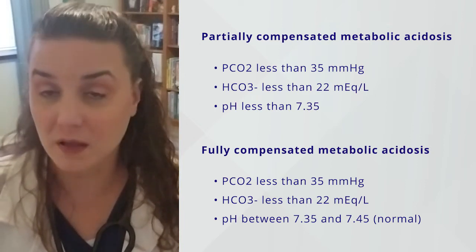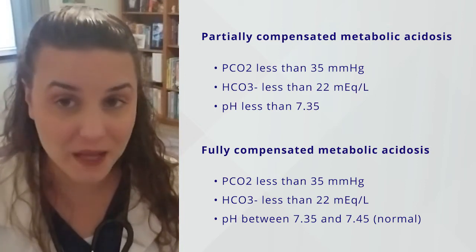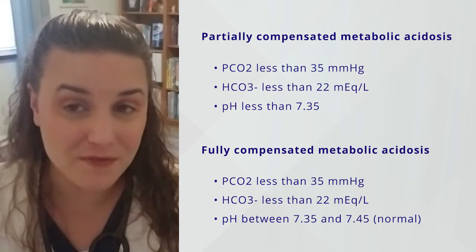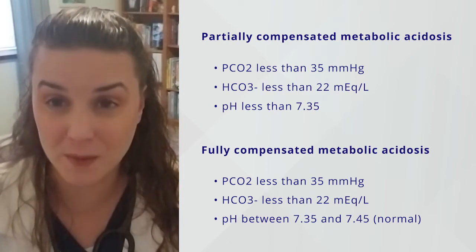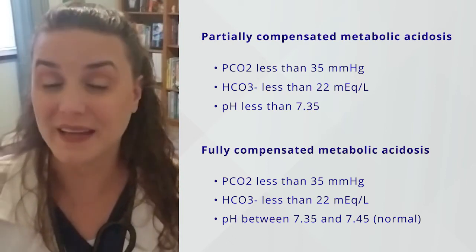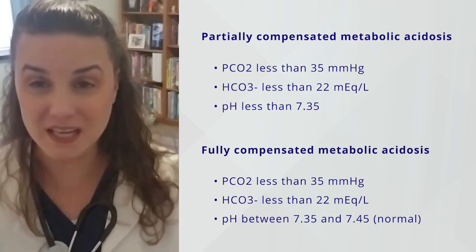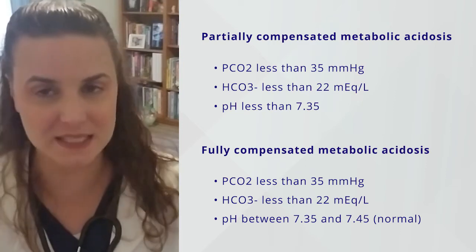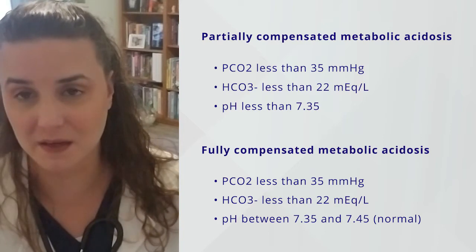Now, if you have a low bicarb less than 22, a normal pH between 7.35 and 7.45, and a low partial pressure of carbon dioxide less than 35 — the pH has been brought back to normal limits, homeostasis has been restored. So it's fully compensated metabolic acidosis, because the lungs are working to compensate it.